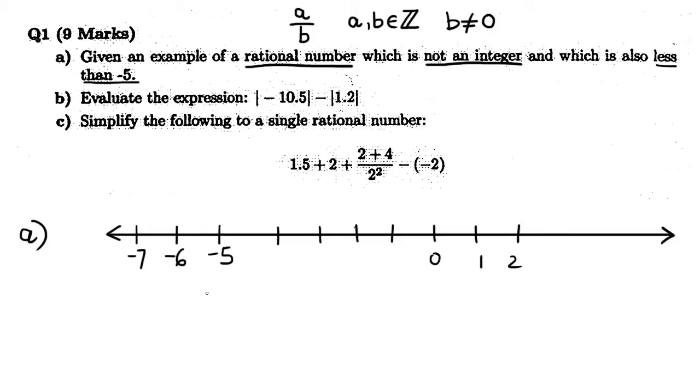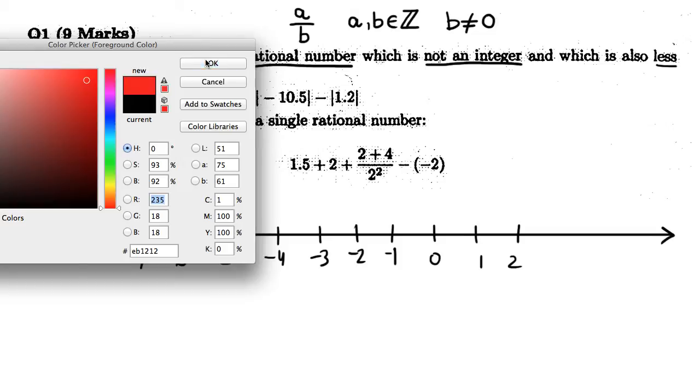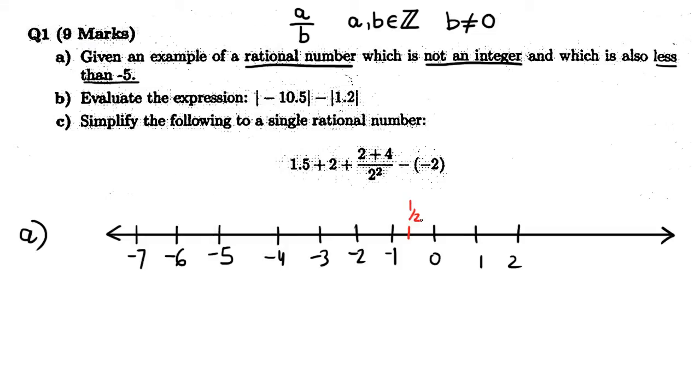But it is not allowed to be an integer. So if we said negative 6, that would not be a good answer because it is an integer. So we need a fraction which is not an integer that's less than negative 5. I think maybe the easiest way to do this would be just to remember that, for example, this is 1 half, right? This would be negative 1 half. This would be negative 3 halves. Oh, something's wrong here. Sorry. Let me back up there. 1 half is actually here, right? Sorry about that.